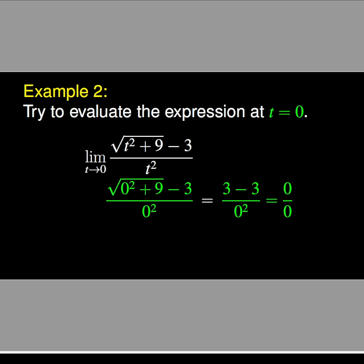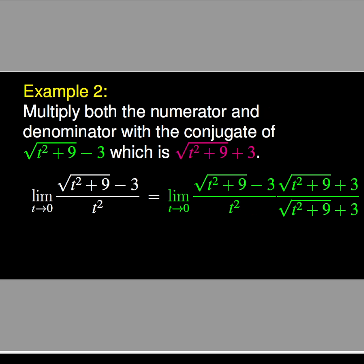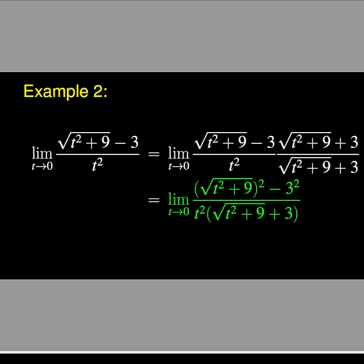Then we multiply the numerator and denominator with the conjugate expression, which is √(t² + 9) + 3. On the numerator, we have √(t² + 9) - 3 times its conjugate √(t² + 9) + 3. On the denominator, we have t² times √(t² + 9) + 3.